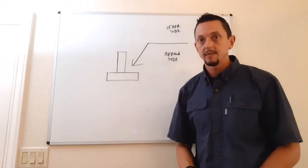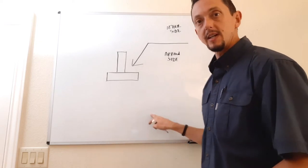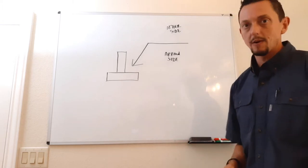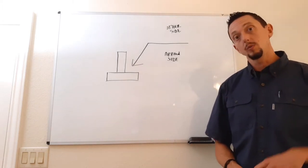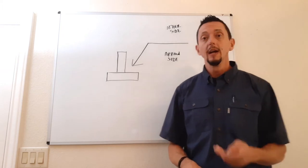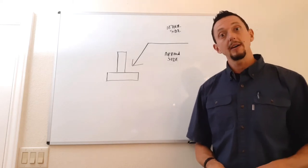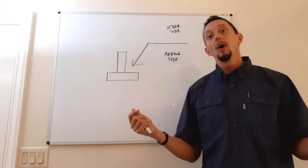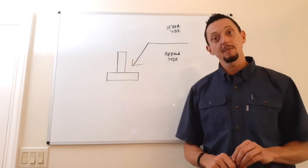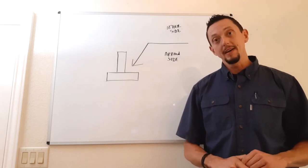That never changes — it doesn't matter where the weld symbol is located. The top of the reference line is always other side, and the bottom is always arrow side. This tells us where to put our weld, which is very important when there are two different sides to a joint and they're only calling for one weld. Getting it wrong could mean spending half your day grinding the weld out, which is no fun.